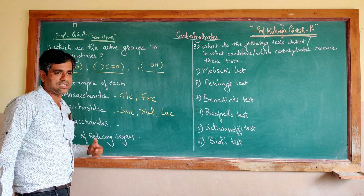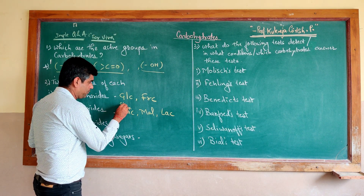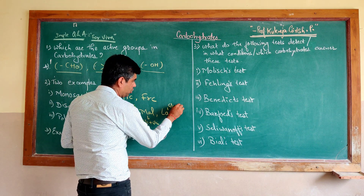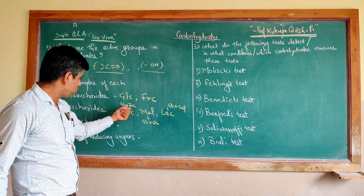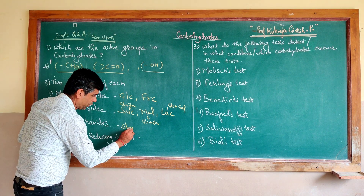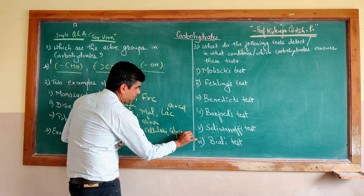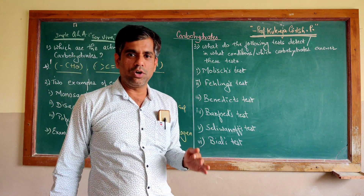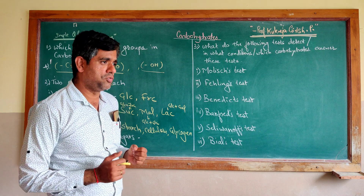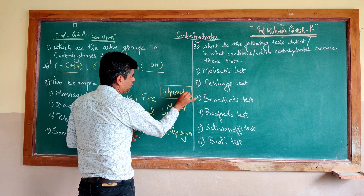The examiner may ask what these disaccharides are made of. Remember: sucrose is made of glucose and fructose; maltose is made of two glucose units; and lactose is made of glucose and galactose. For polysaccharides, we have starch, cellulose, and glycogen — all three are made of many repeating units of glucose. The bond in typical carbohydrates is referred to as the glycosidic bond.